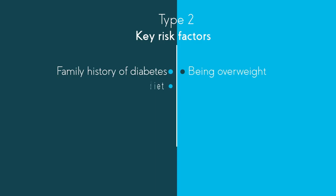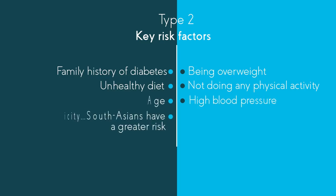There are some key risk factors associated with type 2 diabetes, including a family history of diabetes, being overweight, having an unhealthy diet, not doing much or any physical activity, age, high blood pressure, and ethnicity, where South Asians have a greater risk.